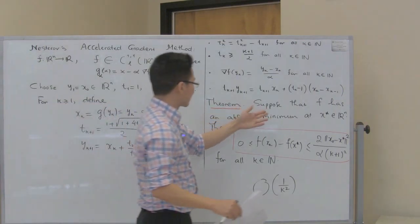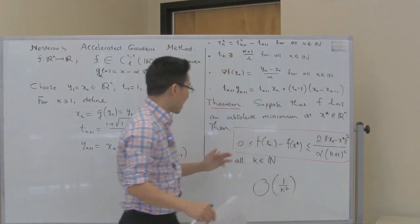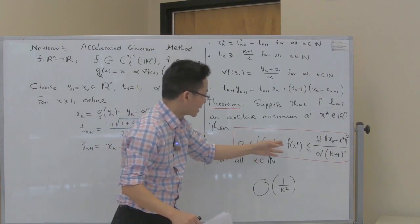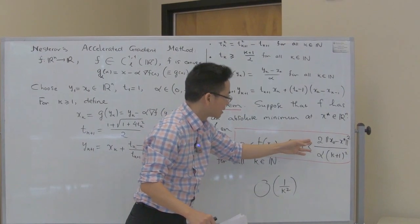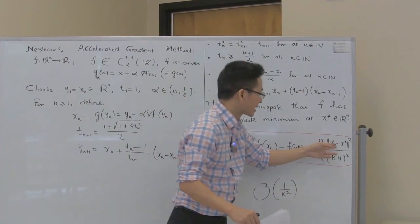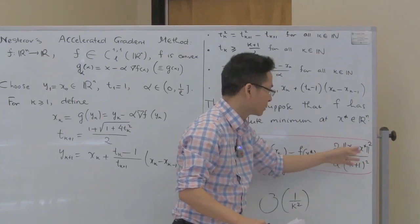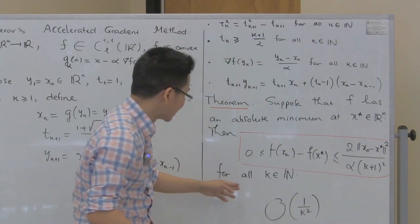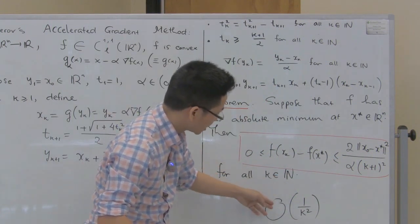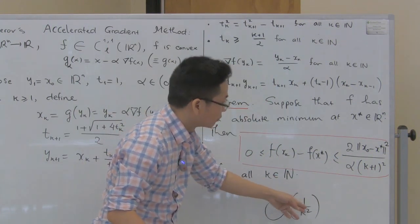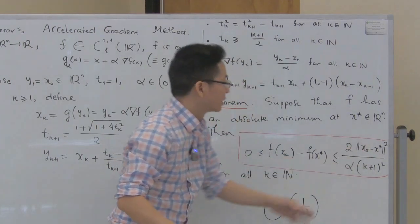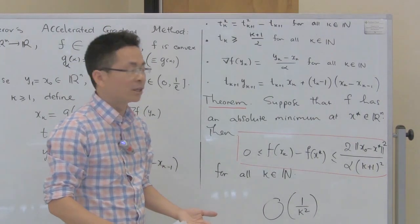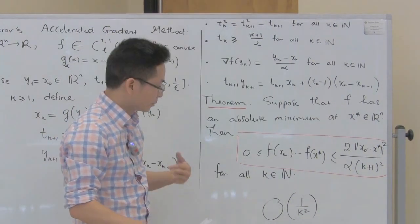Suppose that f has an absolute minimum at x* in R^n. Then 0 ≤ f(x_k) - f(x*) ≤ 2 * norm(x_0 - x*)^2 / (alpha * (k+1)^2). Because of this, we say that this algorithm converges with convergence rate O(1/k^2), which is a big improvement compared with the convergence rate of the gradient method from previous lectures.